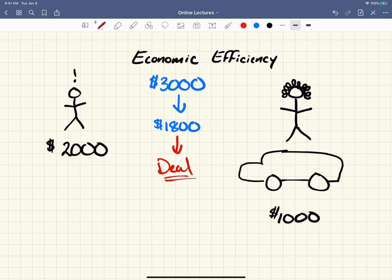Now, what has happened? We have two things going on here. One is we have a consumer surplus. You, the buyer, were willing to pay $2,000, but you only had to pay $1,800.